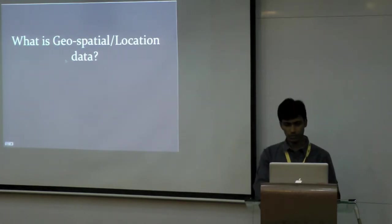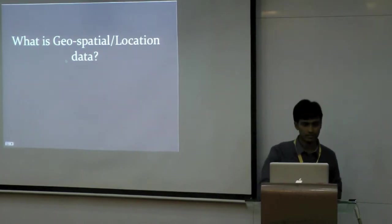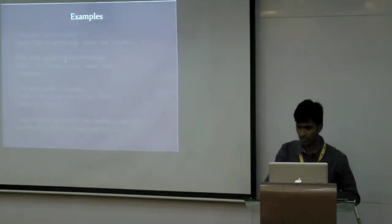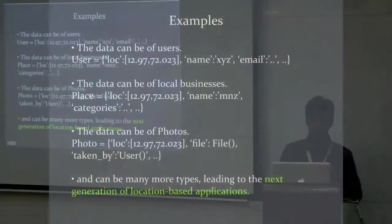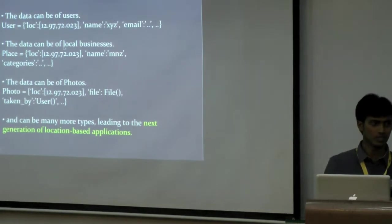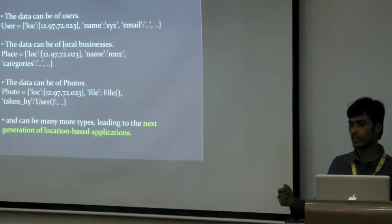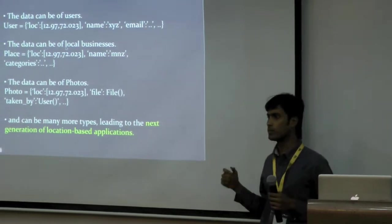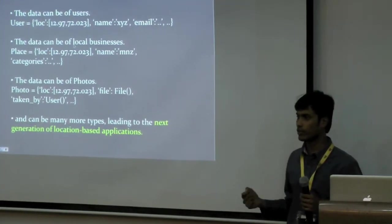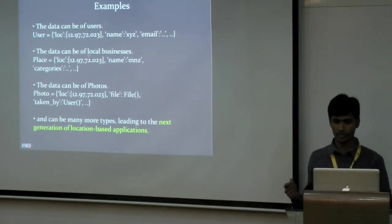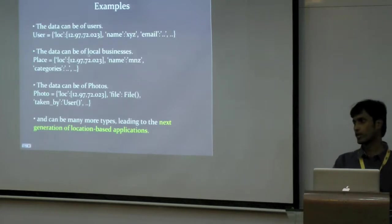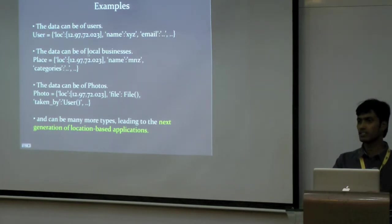So I wanted to go to the topic. What is geospatial location data? I would call it as any data which has a location associated with it. So, it can be users. Every user has a location associated with them. The data can be of local businesses as well. The data can be of photos, where basically some applications allow users to take photos and basically associate a location with it. There can be many possibilities with location. So, how do you build such kind of location-based platform in the backend as well as the applications along with it?